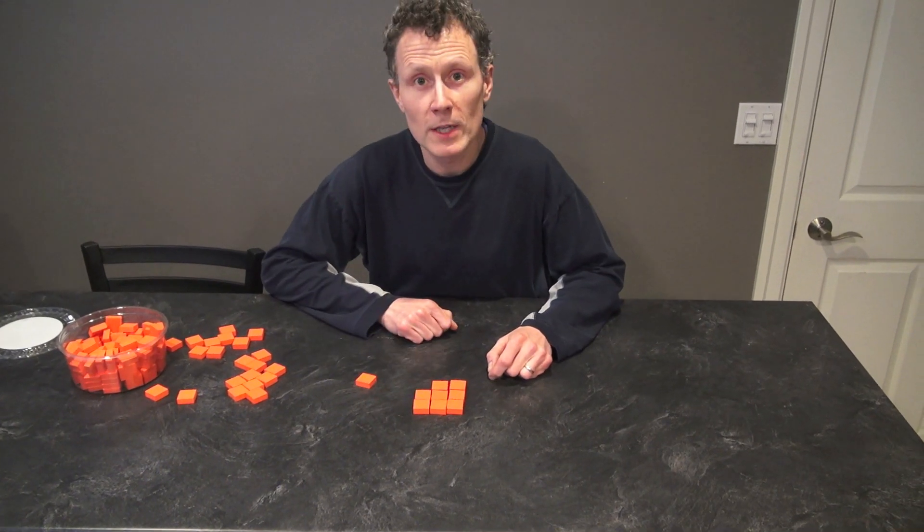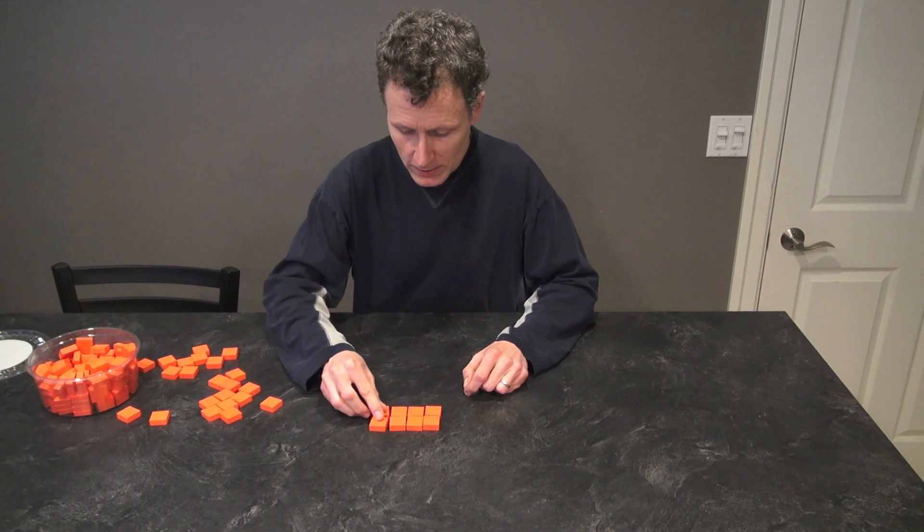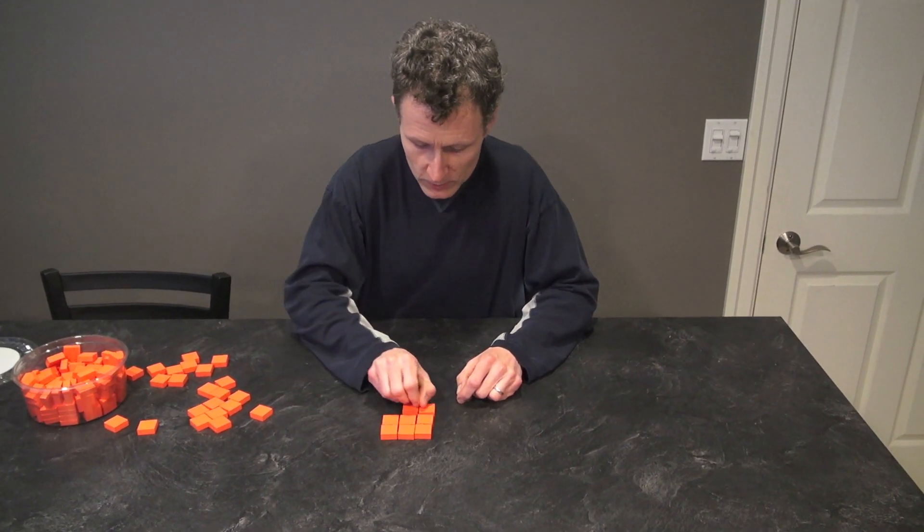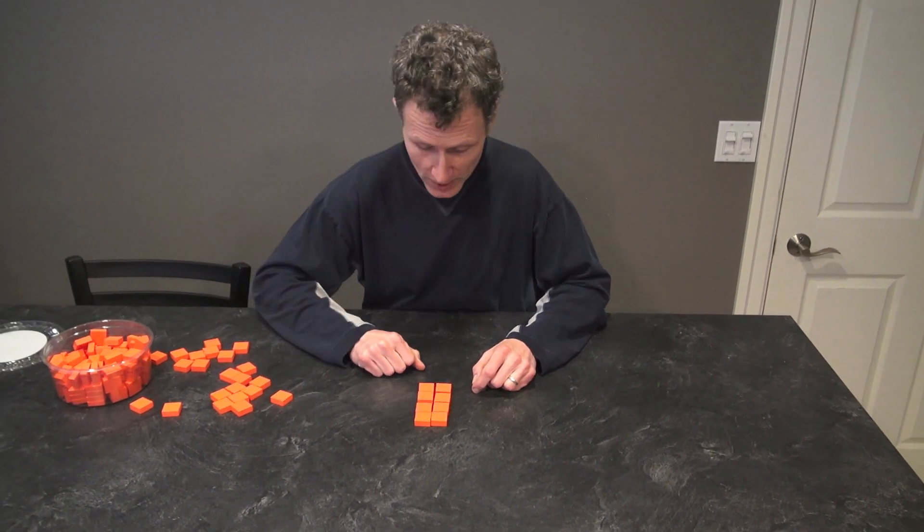Eight's not a perfect square. If I only have eight, there's no way to arrange eight as a square. I can move these ones over here. I can make it four by two or two by four. That's a rectangle, but it's not a square.